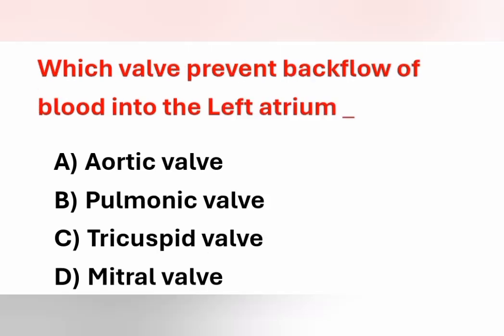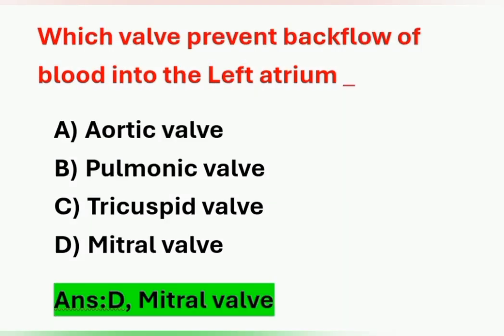Next question: which valve prevents backflow of blood into the left atrium? Options: A) Aortic valve, B) Pulmonic valve, C) Tricuspid valve, D) Mitral valve. The valve present between the left atrium and left ventricle is the mitral valve, also known as the bicuspid valve. It prevents backflow of blood into the left atrium. Option D is the correct answer.